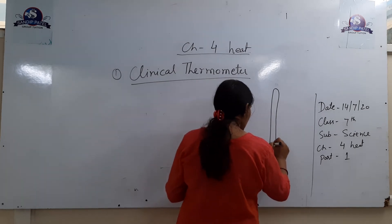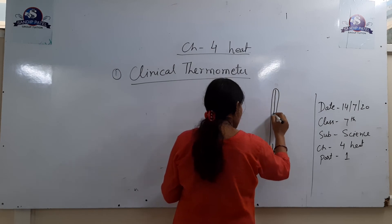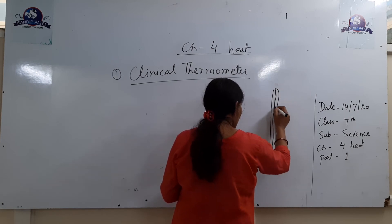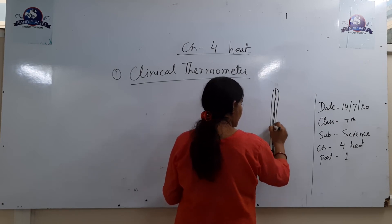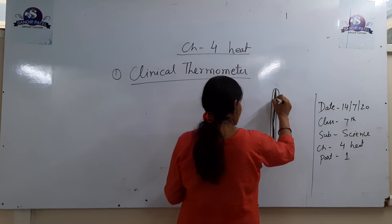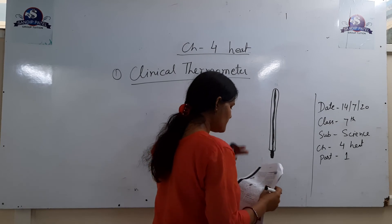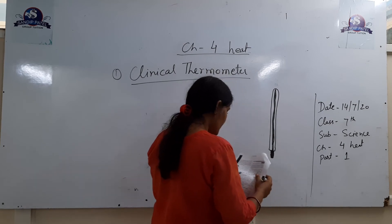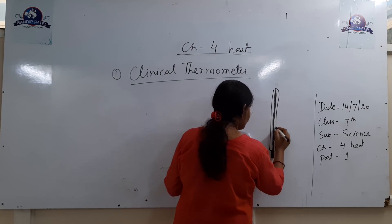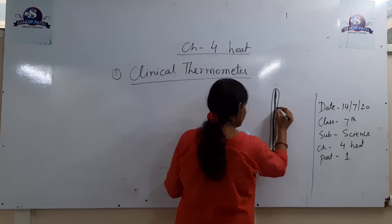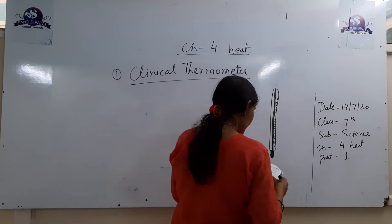Inside the clinical thermometer there is a glass tube. Inside the glass tube, a metal called mercury is filled. The outer glass has measurements on it. The range is 35 to 42 degrees Celsius.